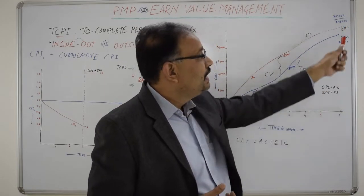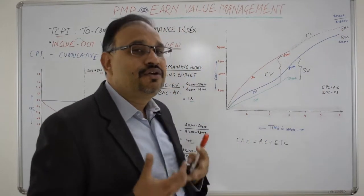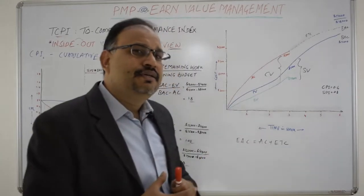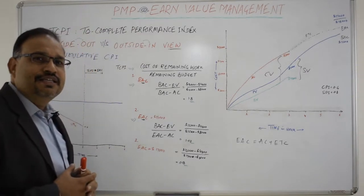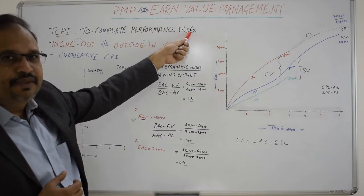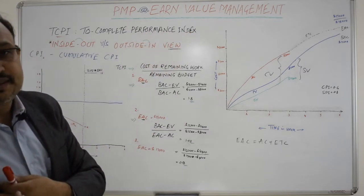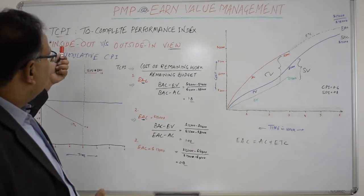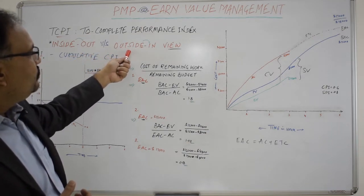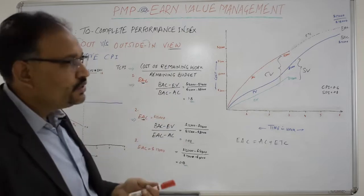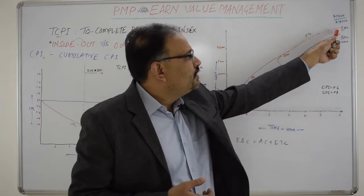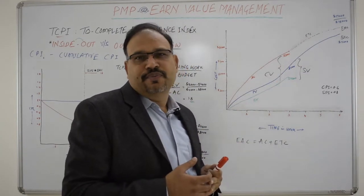Or the project may revise the BAC to arrive at a fixed EAC and understand the desired cost performance level needed to catch up with that amount. This cost performance level is what TCPI — the To-Complete Performance Index — focuses on. The key difference from other forecasting methods is that other methods give an inside-out view, while TCPI gives an outside-in view: given the BAC or EAC target for the remaining duration, what is the desired cost performance index needed to achieve it?